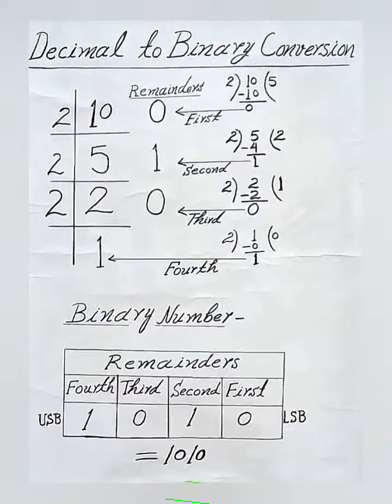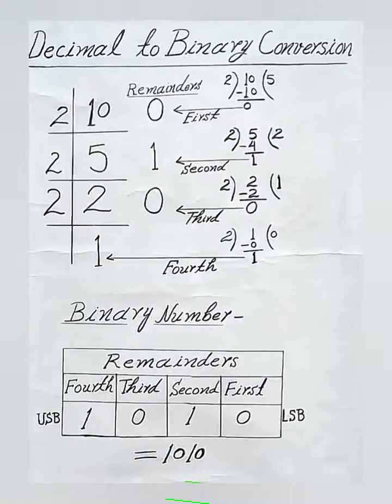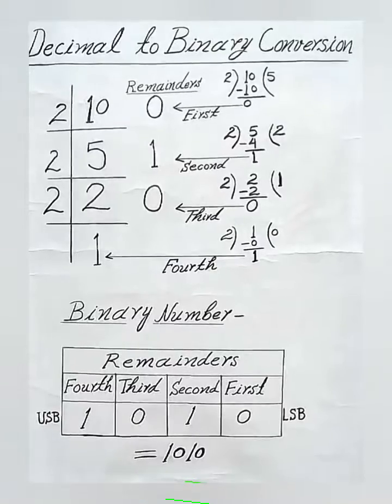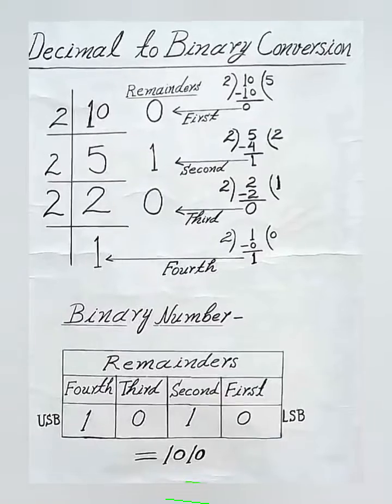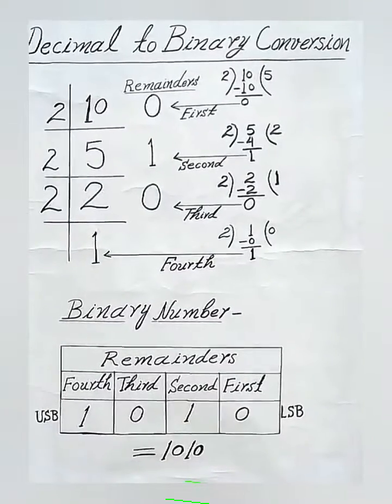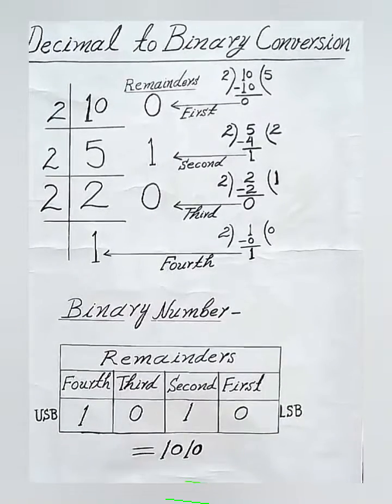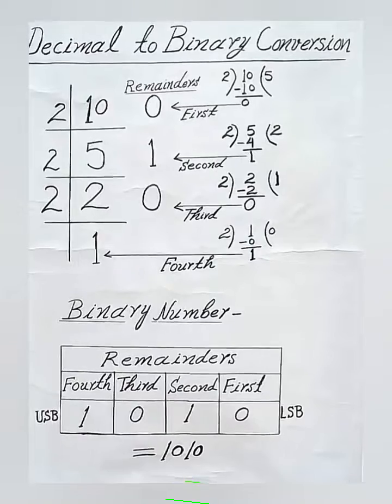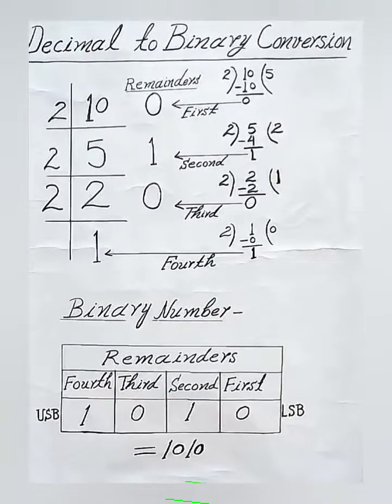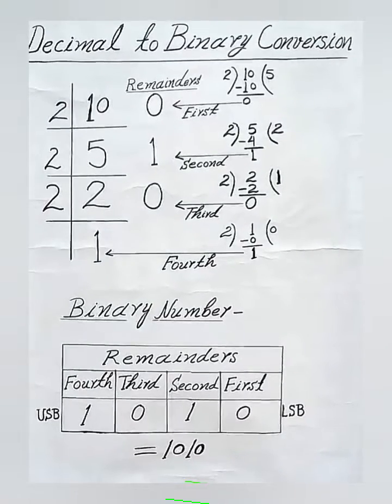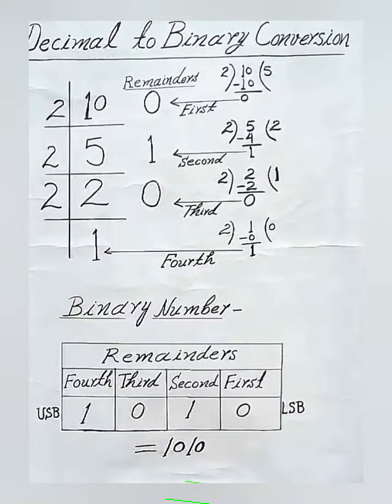We're getting the third remainder 0. And again we're dividing 1 by 2 and the fourth remainder we're getting 1. Now we are arranging remainders in lower side bit first remainder and upper side bit fourth remainder.